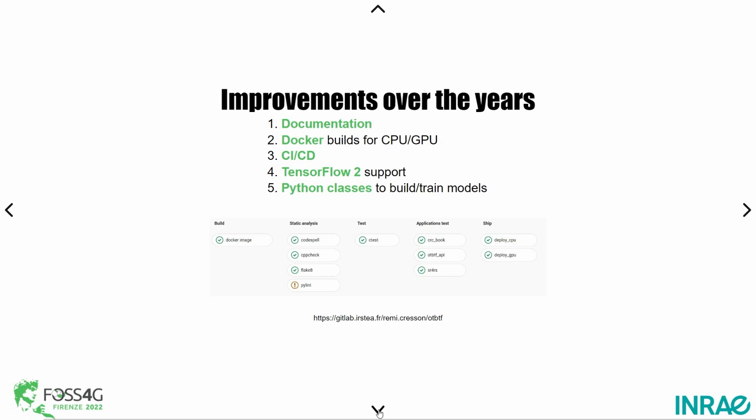Recently we had TensorFlow 2 support. Why is it so important? Because TensorFlow 1 was really ugly to use, and for developers to debug it was really difficult — that's why a lot of people went to PyTorch. But TensorFlow 2 is much better; it's really easy to code now and has a lot of advantages, especially for distributed training, which I will talk about a bit later.